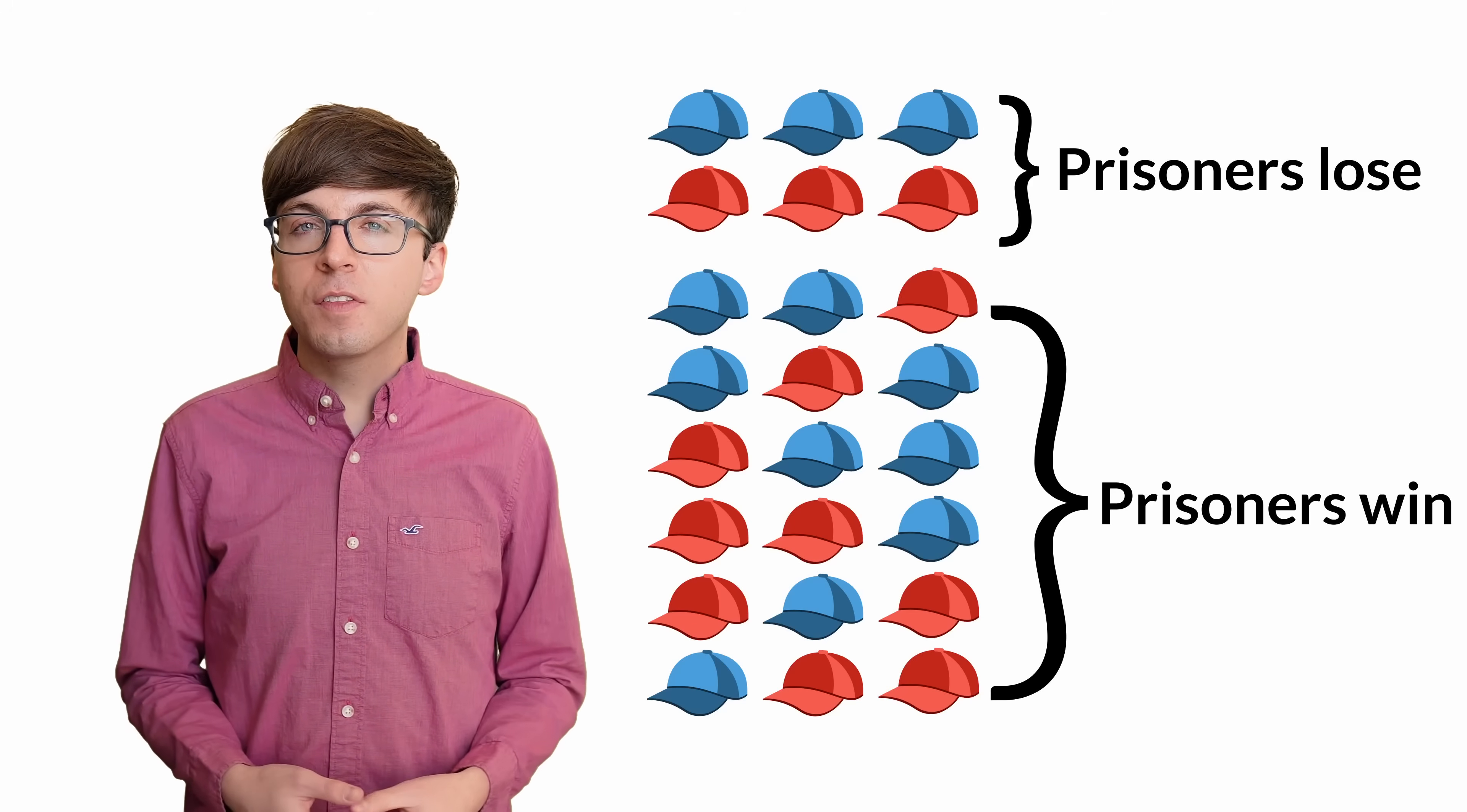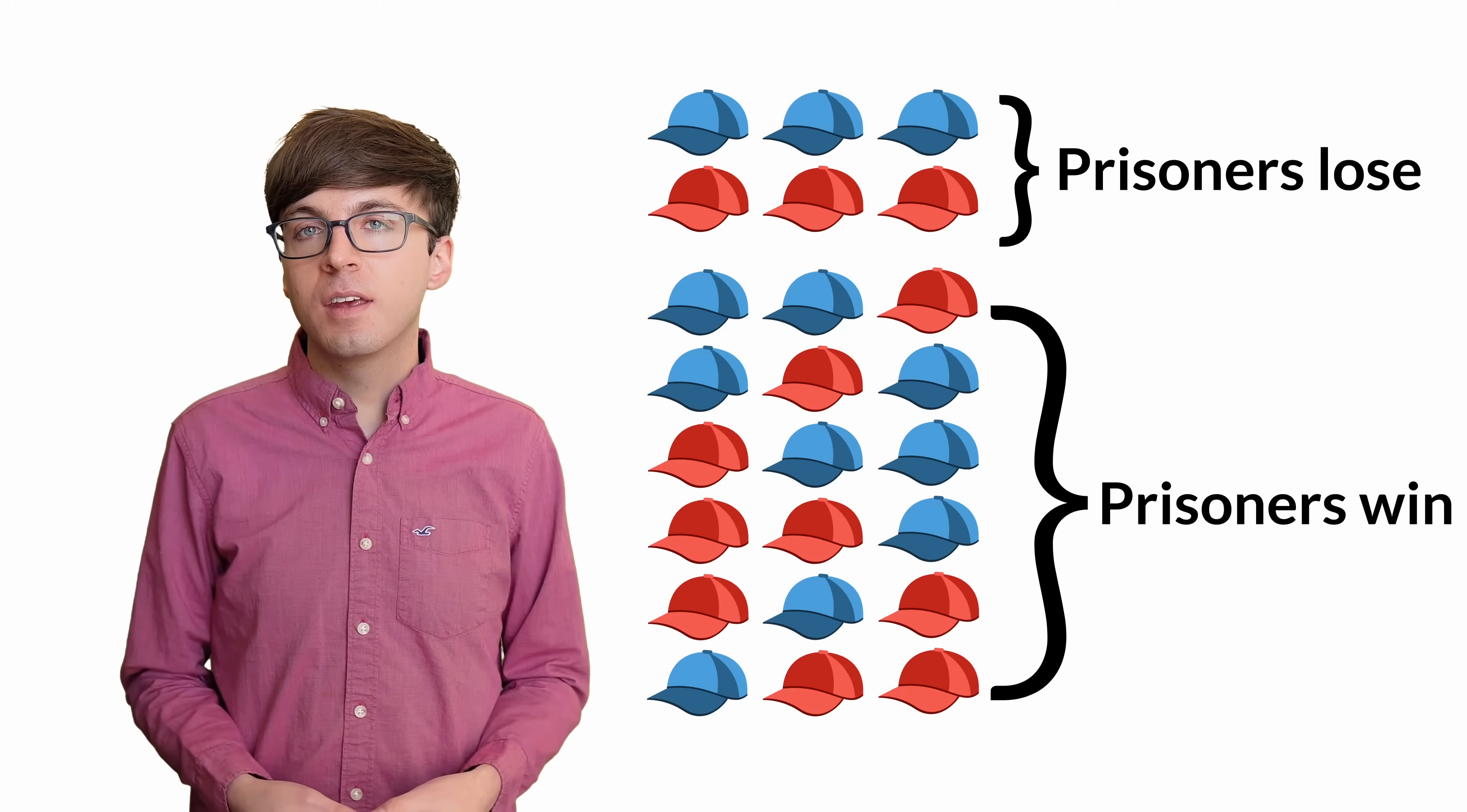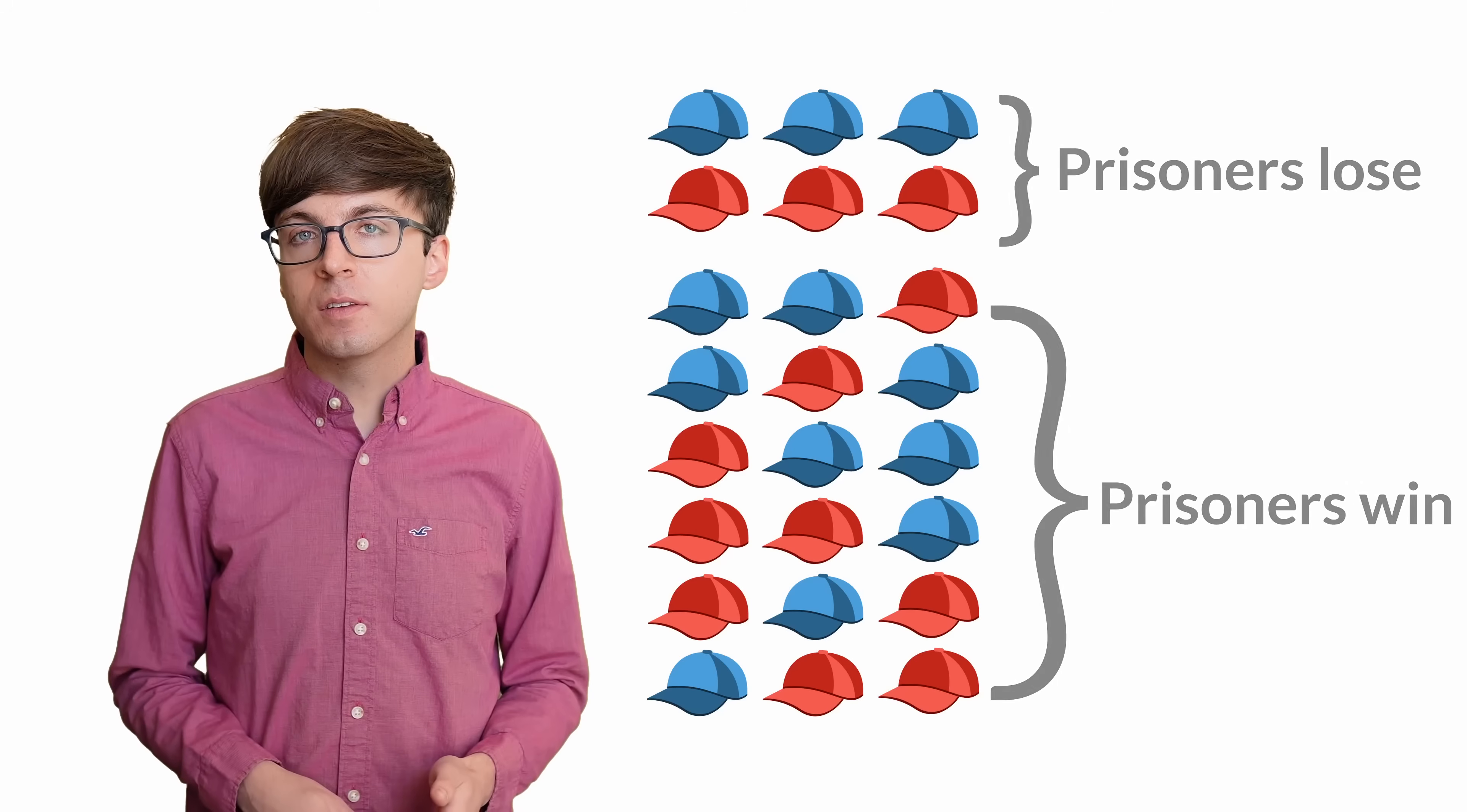How on earth did this strategy work? Each prisoner only sees information that is independent of their own hat color. So each guess is a 50-50 guess. The idea is that the prisoners were able to bunch up their possible failures, and spread out their possible successes.